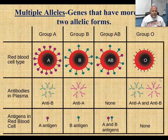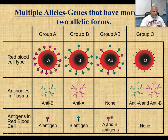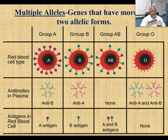People who have type A blood are going to form A antigens on the surface of their red blood cells, and their immune system has the potential to produce type B antibodies. People who have type B blood are going to have B antigens on the surface of their red blood cells and the potential to make A antibodies.